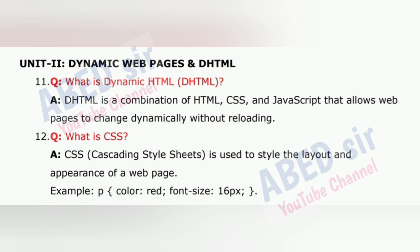Question 12: What is CSS? CSS, Cascading Style Sheets, is used to style the layout and appearance of a web page. Example: p { color: red; font-size: 16px; }.